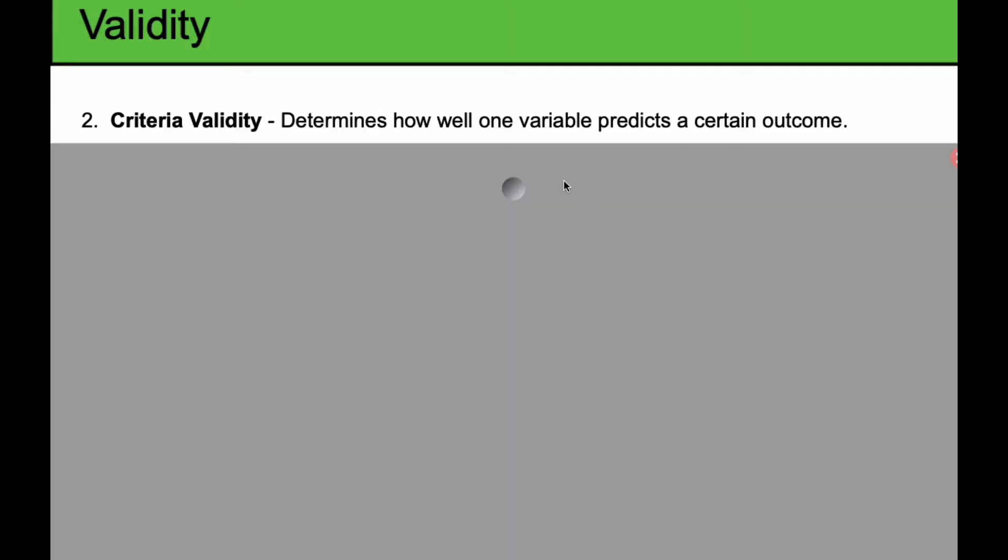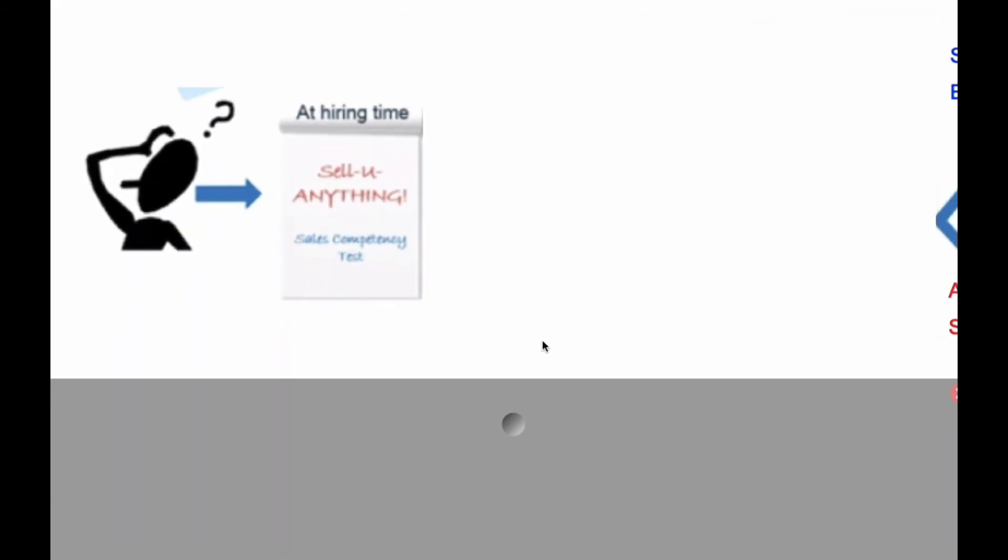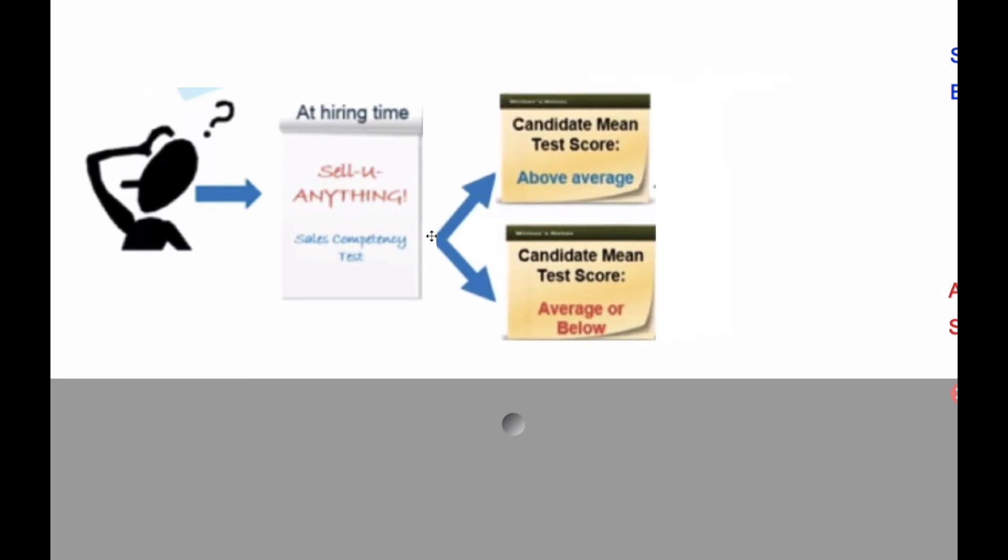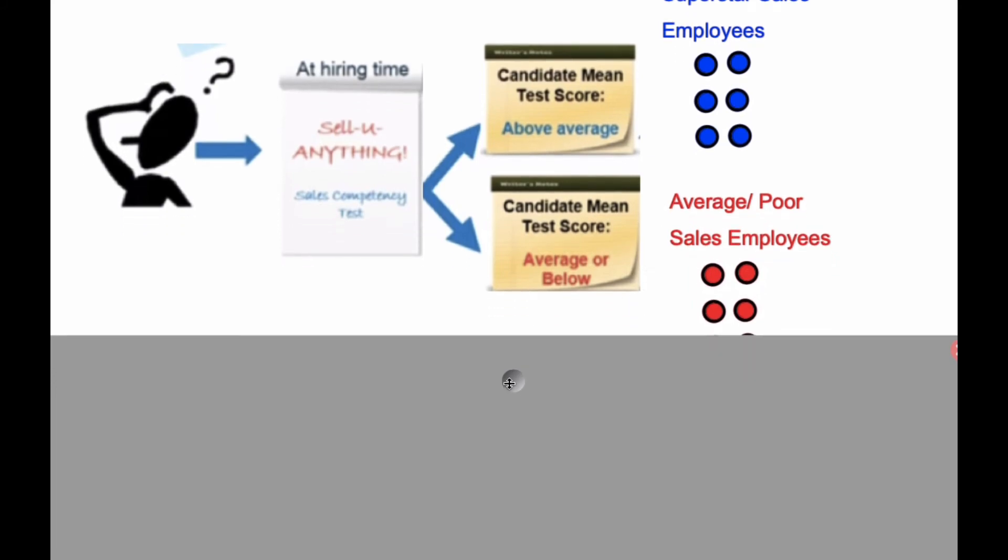And finally, the last validity thing we consider is criteria validity, and we determine how well one variable predicts a certain outcome of another variable. Imagine that you're part of a hiring company. It's hiring time, and you sell anything is what the name of your company is, and you're going to give a sales competency test. You come along and take the test for some of the people who you're hiring, and you get candidates that score above average on this test. They are your superstar sales employees, and there are six of them. People who score below average, you still end up hiring them, but they end up being your poor salespeople.